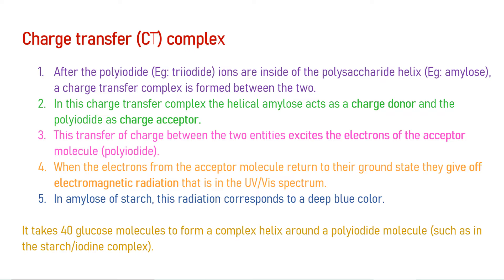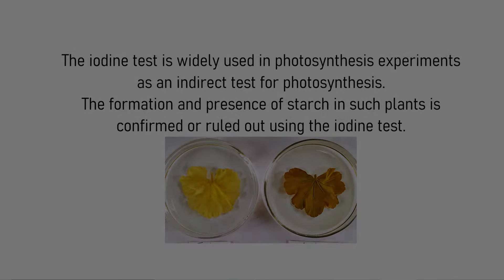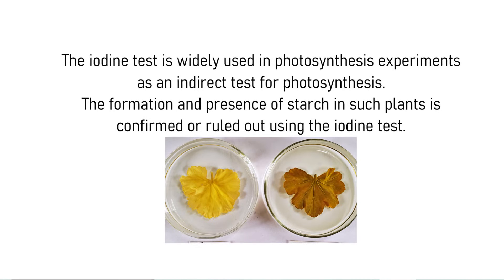It takes 40 glucose molecules to form a complex helix around a polyiodide molecule. The iodine test is also popularly used in plant physiology experiments as an indirect test to check if a plant is photosynthesizing. Starch is formed as reserve food material primarily in the leaves of plants during photosynthesis, and the formation and presence of starch is confirmed or ruled out using the iodine test. Check out the photosynthesis-related experiment videos via the links in the description below.